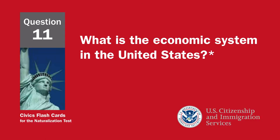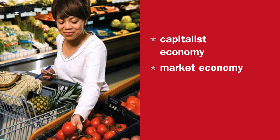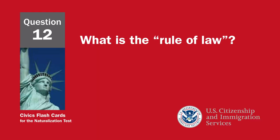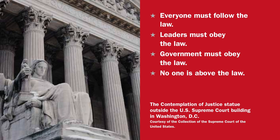What is the economic system in the United States? Capitalist economy, or market economy. What is the rule of law? Everyone must follow the law. Leaders must obey the law. Government must obey the law. No one is above the law.